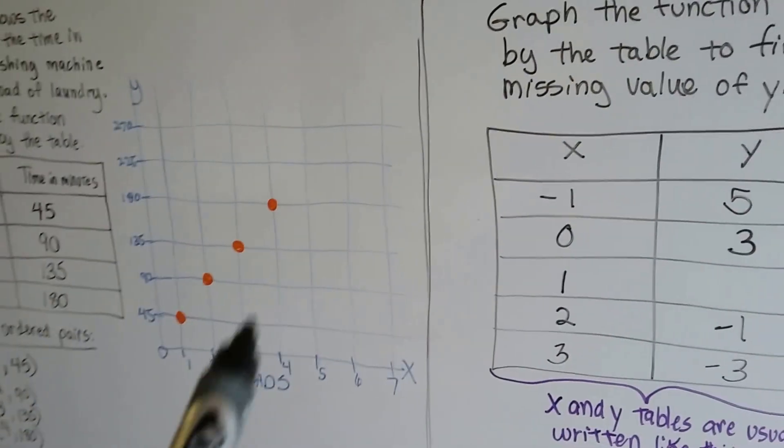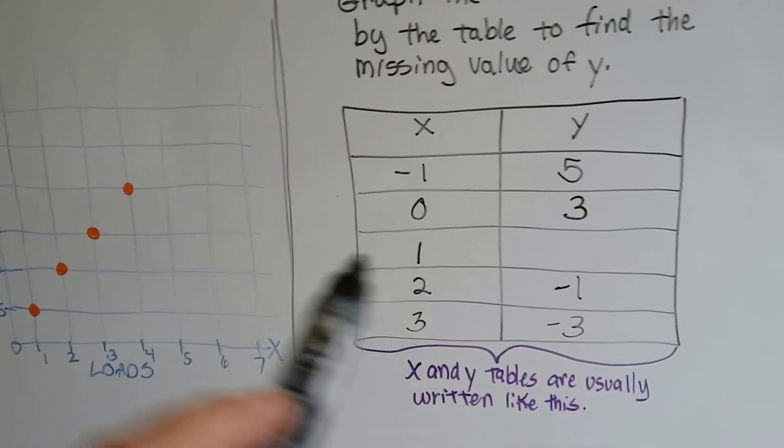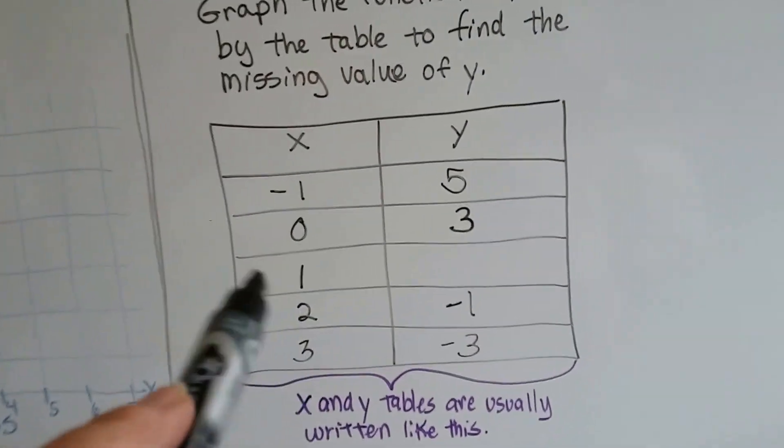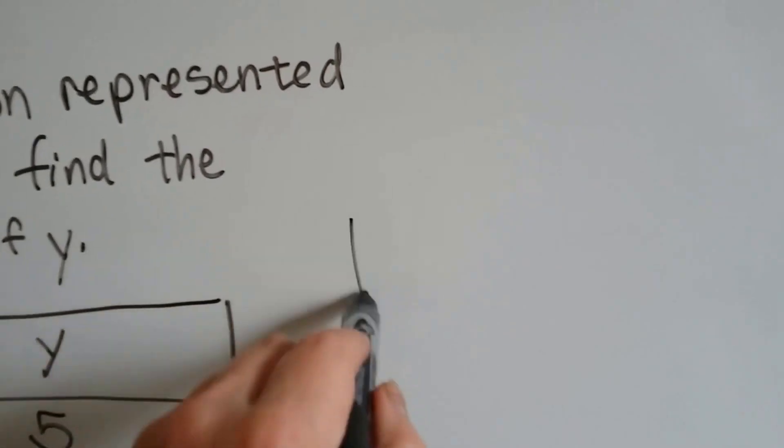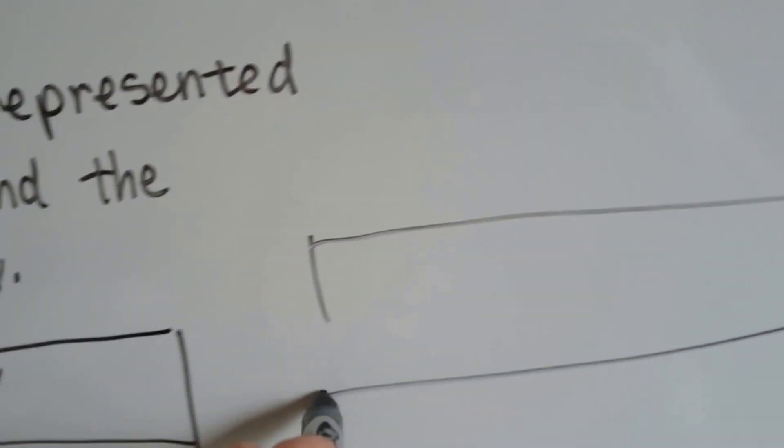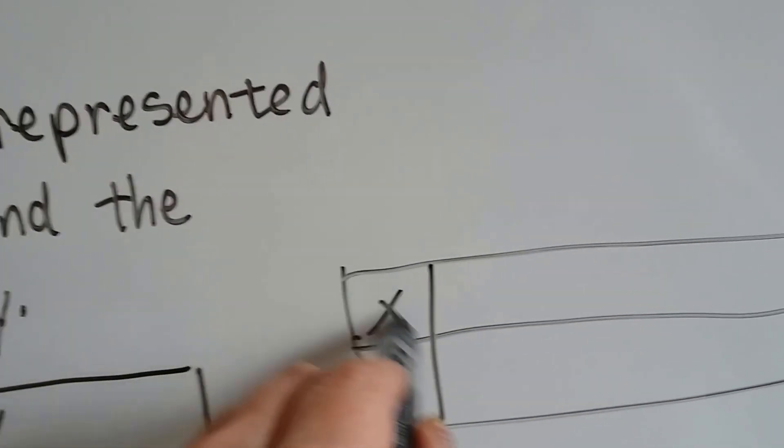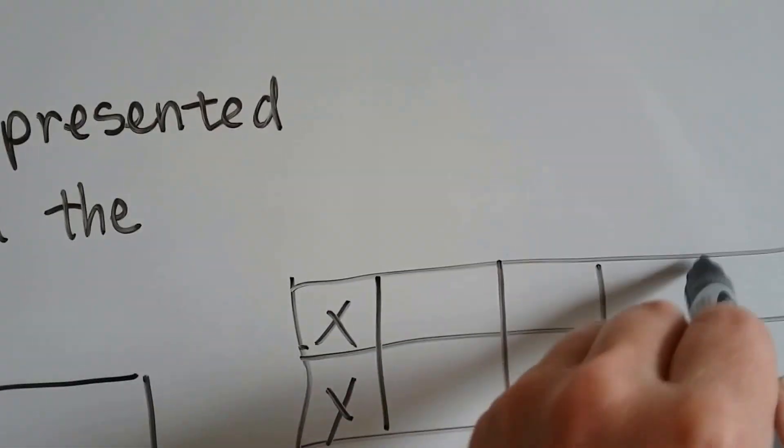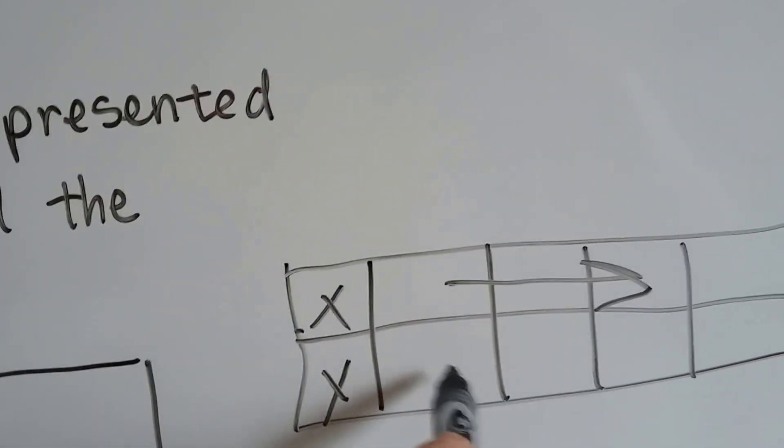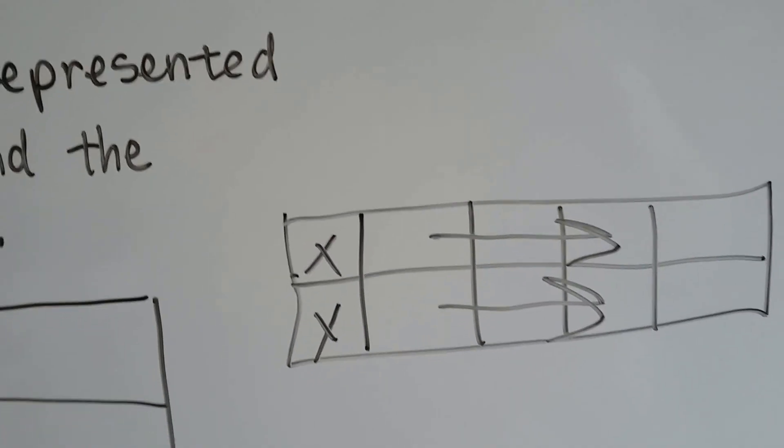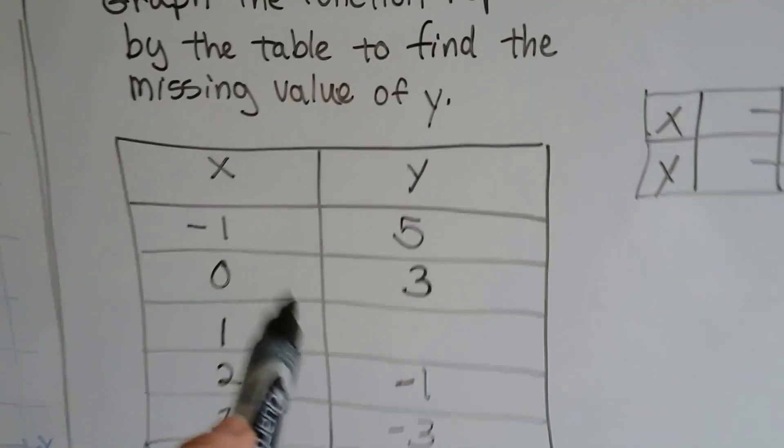Now, sometimes, like in the book, it shows the xy table drawn like this, like we did in the last couple of videos, and then it's got the x values coming across here, and it's got the y values coming across like this, but this is how it's usually written.